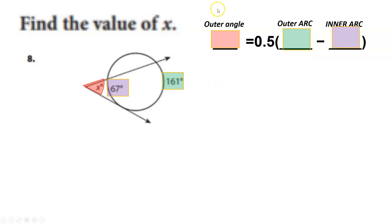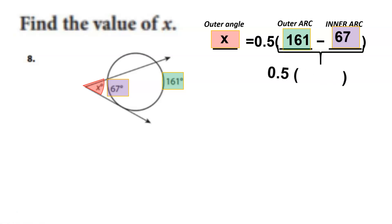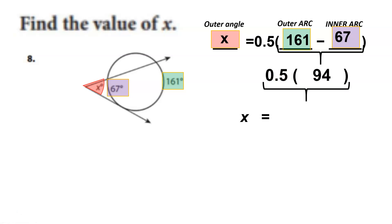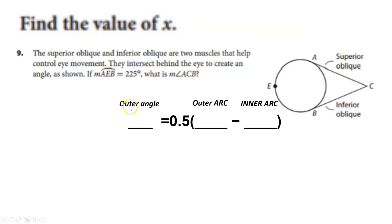The outer angle is there, the outer arc is there, and the inner arc is there. Go ahead and place those numbers in their place — then calculate 161 minus 67, which is 94. Multiply 0.5 times 94, and that gives 47 degrees.